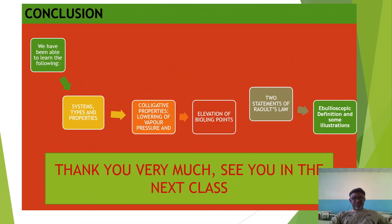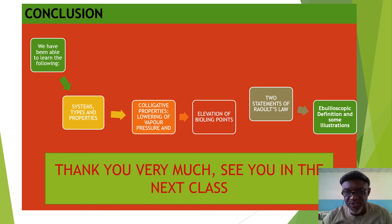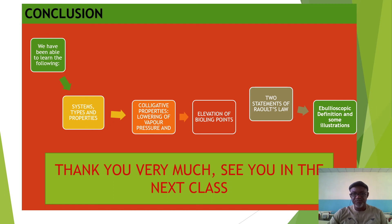In conclusion of this module, we have looked at systems, types, and properties. We have looked at colligative properties — lowering of vapor pressure and elevation of boiling point. We looked at the two statements of Raoult's Law, the ebullioscopic definition, and some worked illustrations. Thank you very much for listening and see you in the next class. Take care.